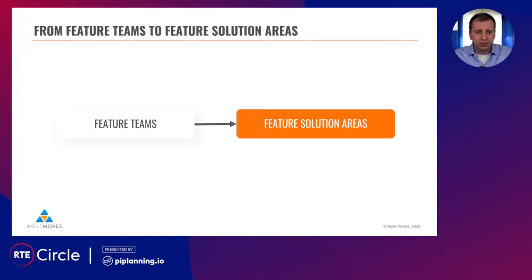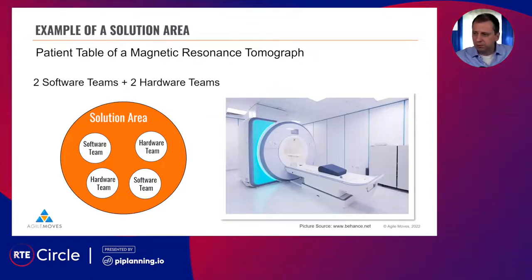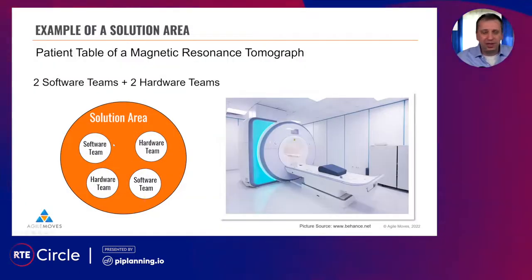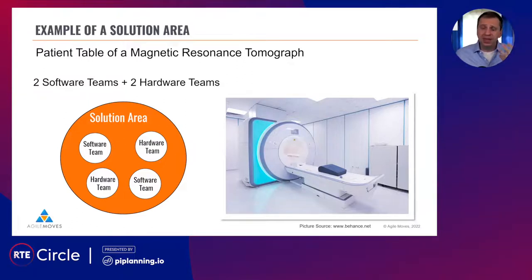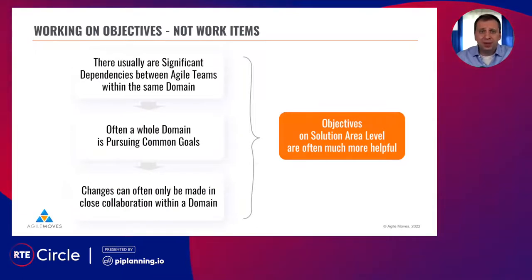Maybe two to four teams — maximum five — could have the tools and skills necessary to create a significant amount of value. Here is an example from an MRI system: we have the patient table, where the patient lies down before the scanner starts working. It could be that we have four teams — two hardware and two software teams — working just on that patient table. They produce significant value to the whole system and can more easily be seen as a feature solution area.